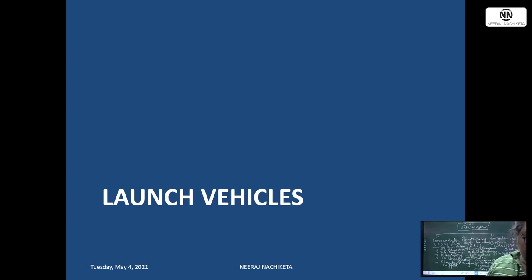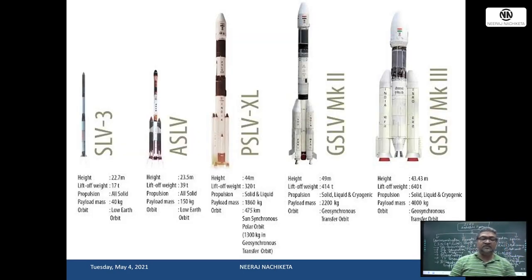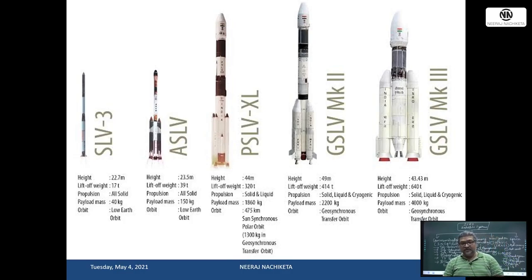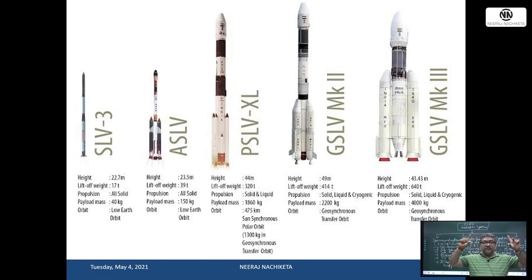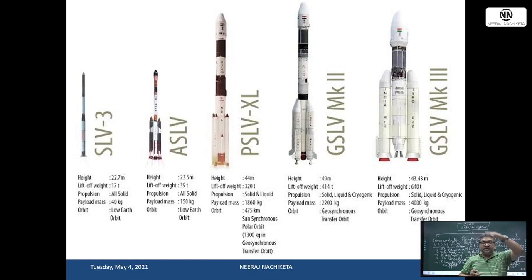India's launch vehicles evolution: historically SLV-3 and ASLV (experimental), then PSLV (Polar Satellite Launch Vehicle), then GSLV Mark 2, and now GSLV Mark 3 - the heaviest rocket at 640 tons. GSLV Mark 3 has two heavy solid boosters, a liquid core engine, and a third stage indigenous cryogenic engine C-25 using liquid hydrogen and oxygen. It was used for the Chandrayaan-2 mission. PSLV and GSLV are ELVs (Expendable Launch Vehicles) - once used, they are done.